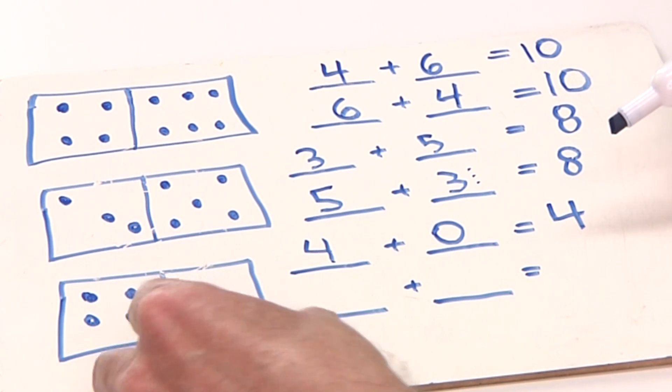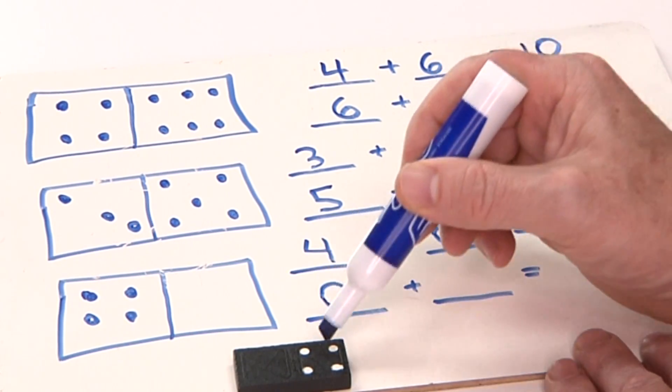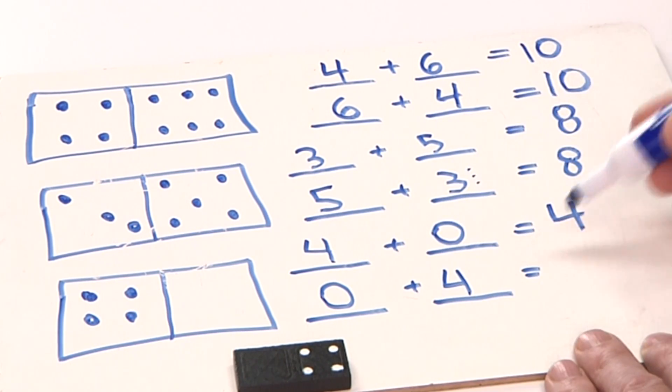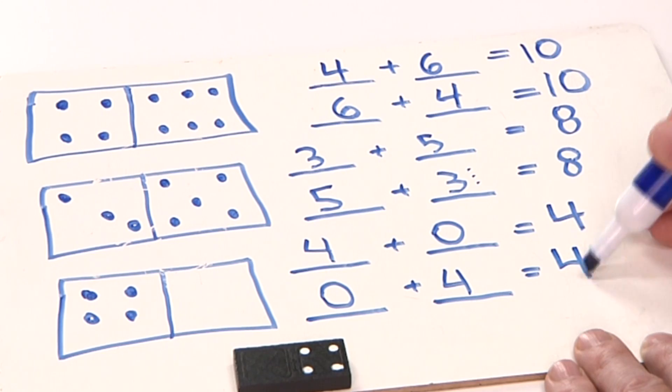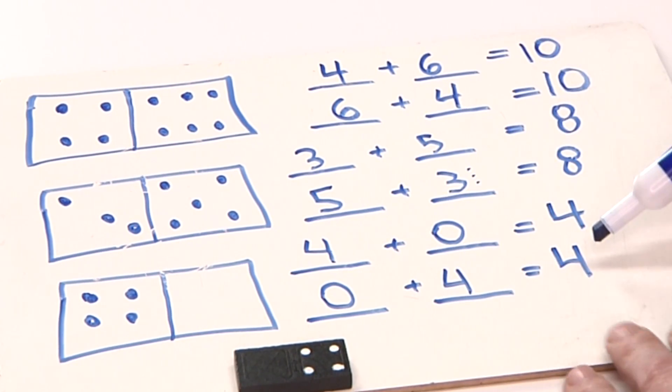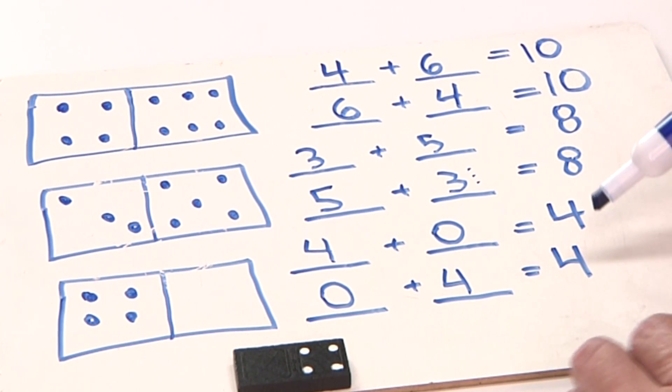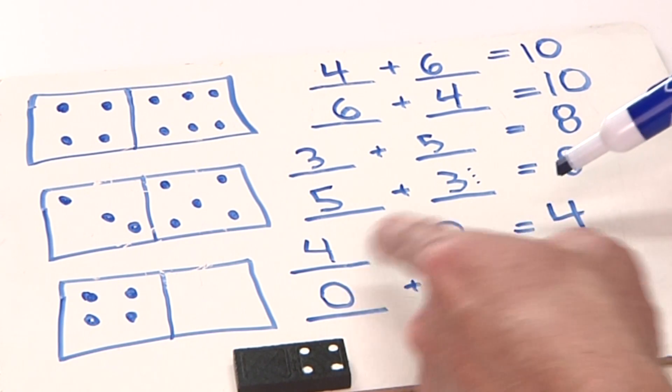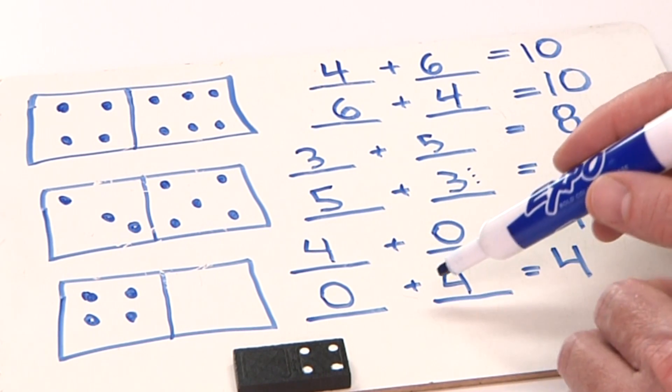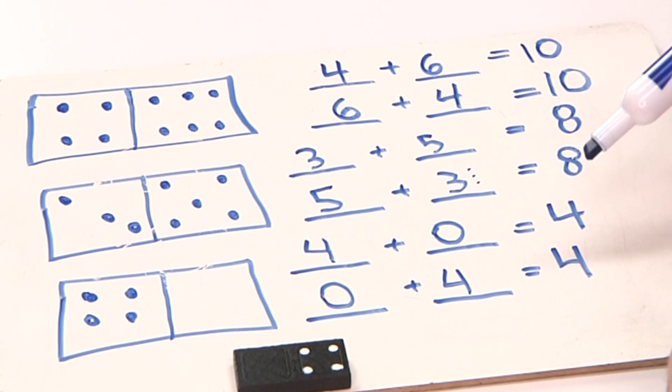Here we have 0 and we have 4. Zero plus 4 equals 4. These are the two addends, this is the sum. And once again, we can add numbers in any order—the sum is the same. When you add 0 to a number, the sum is always that number.